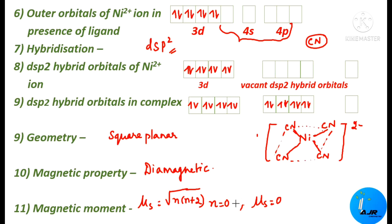You should now clearly understand how VBT is used to explain the hybridization, geometry, and magnetic property of [Ni(CN)₄]²⁻. We will meet with another set of examples in the next video. Until then, this is Dr. Anita Raj signing off. Thanks for watching.